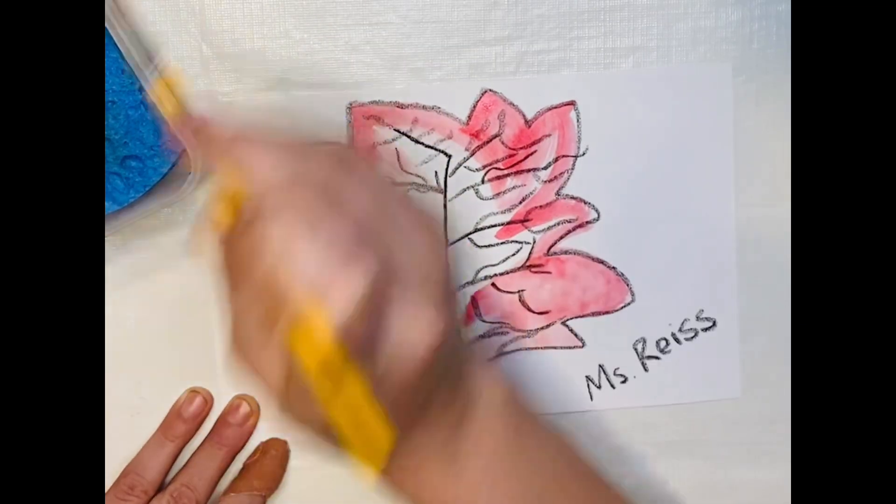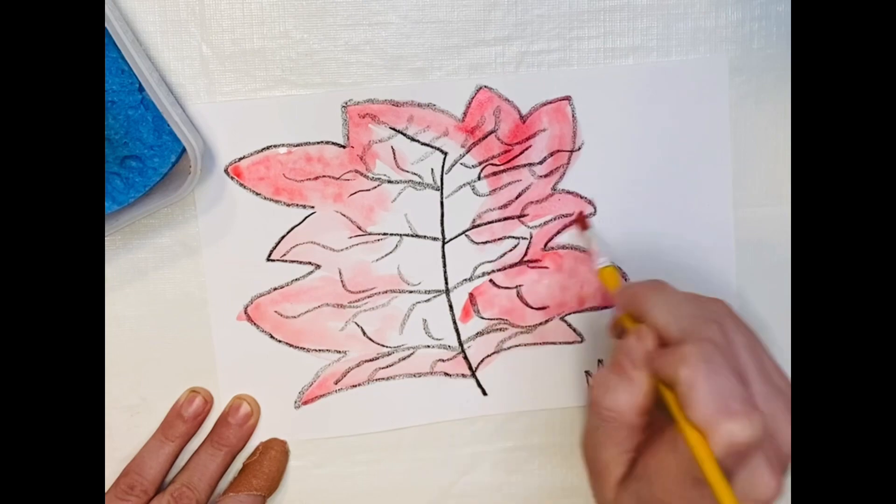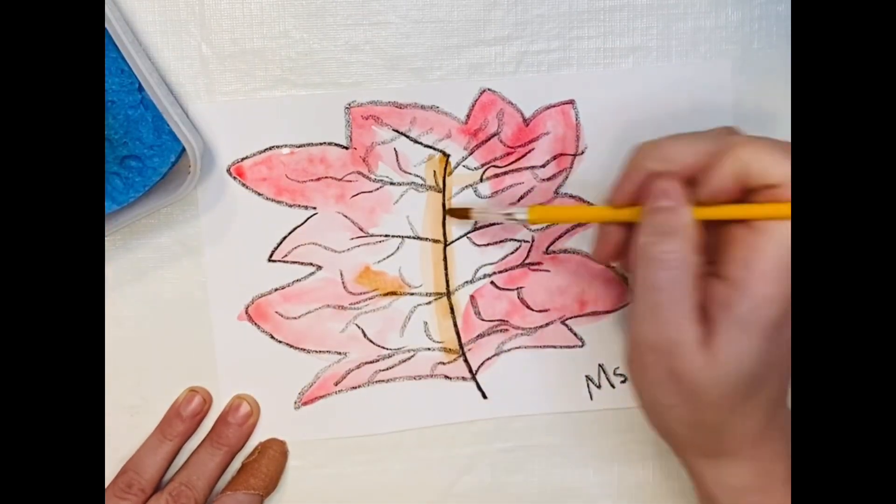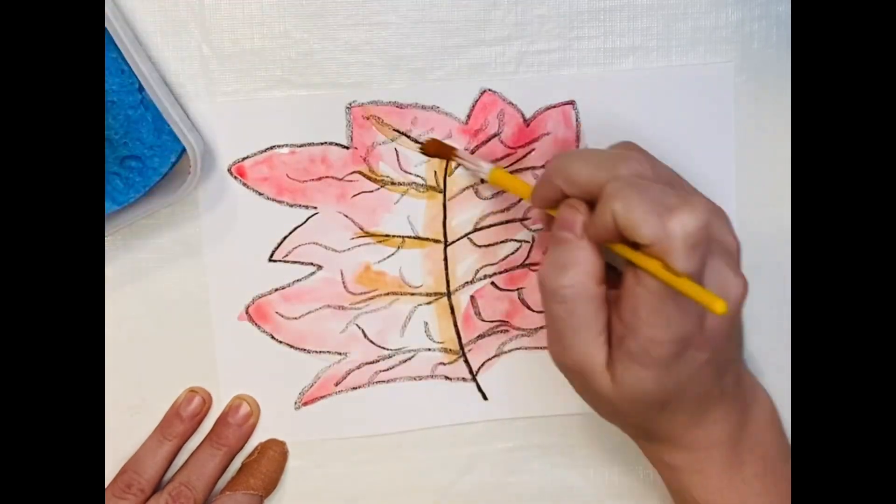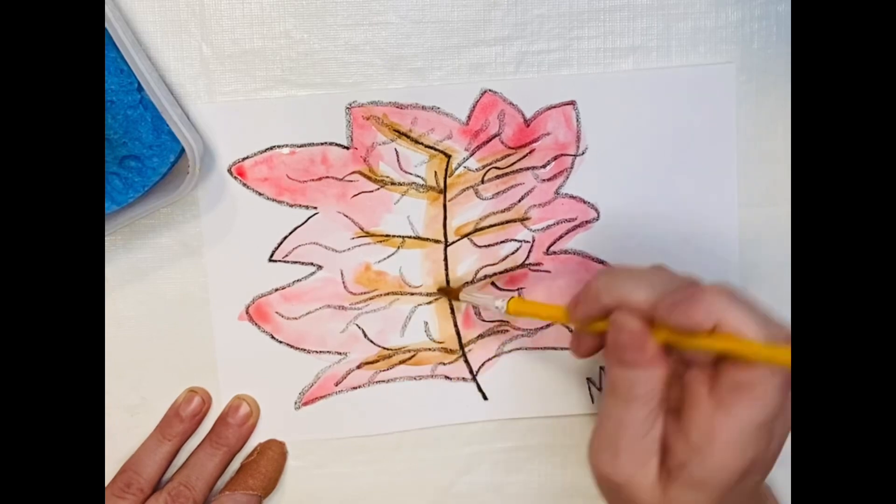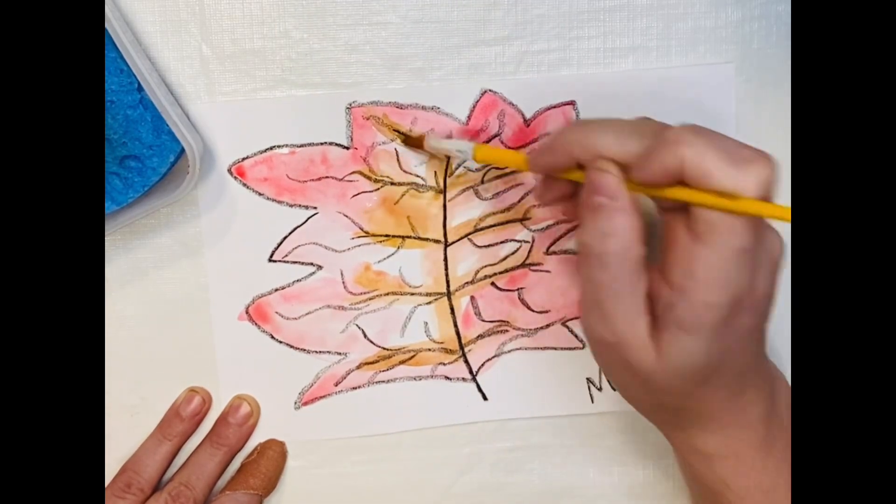The darker the color, the more water you'll need to spread out your color. I'm going to, again, start on the outside and work my way in, adding in my second color, which is brown. And then I'm going to add in water to blend them together.